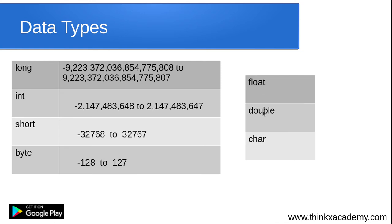Some more data types are float, double, and char. Float and double both handle decimal numbers — for example, 2.5 or 4.6. Float has a lesser range than double. If your number has a decimal that extends to many places, you can assign it as double. Next is the character data type, which holds alphabets like A, B, C, D, X, Y, Z.